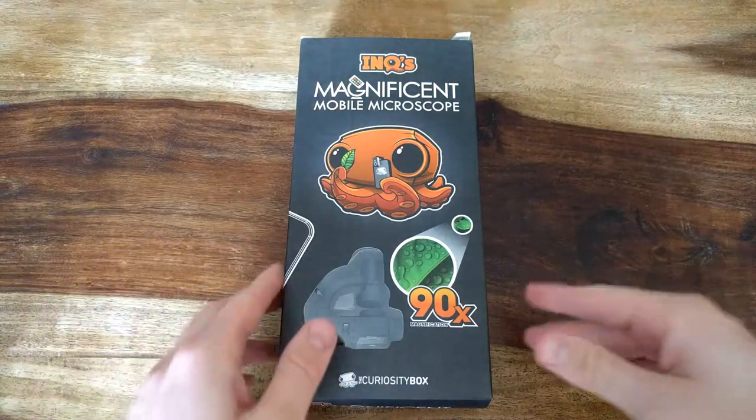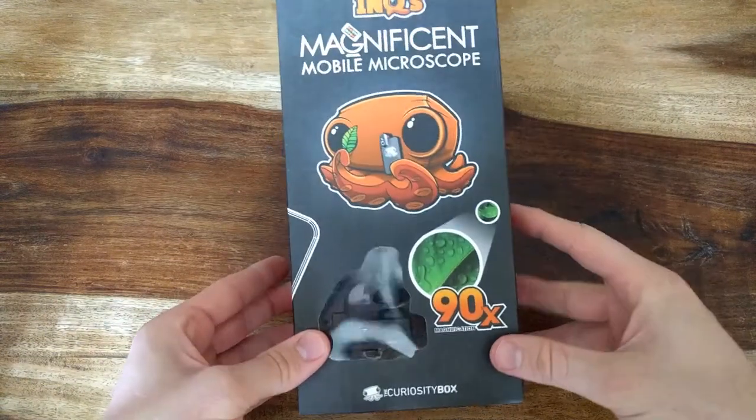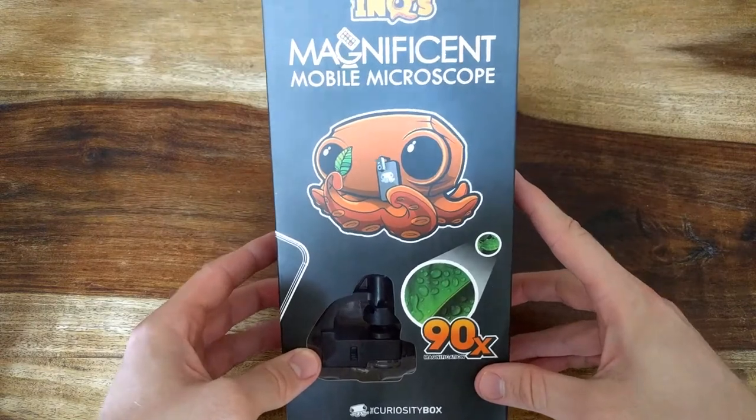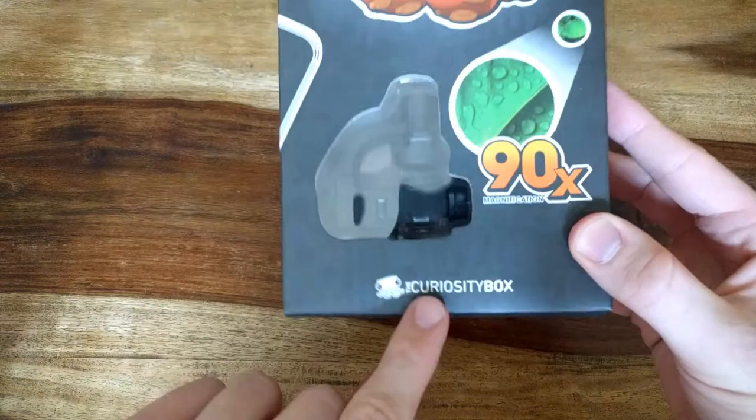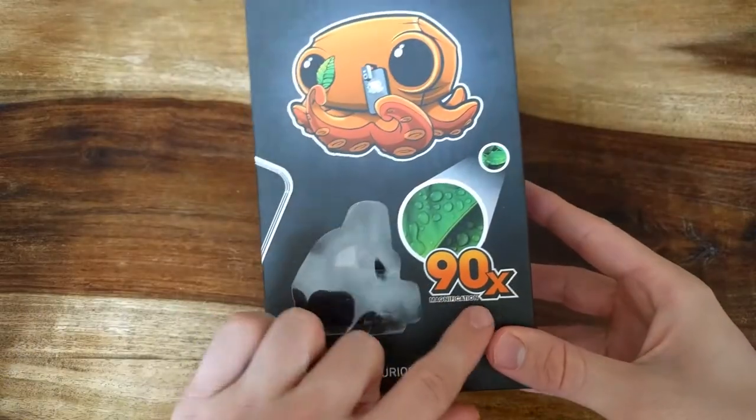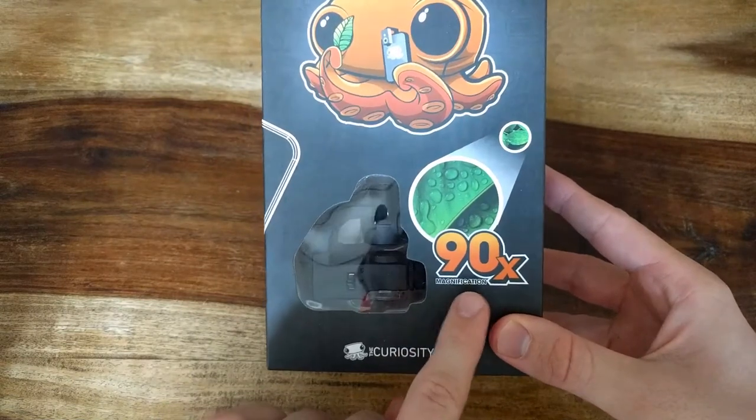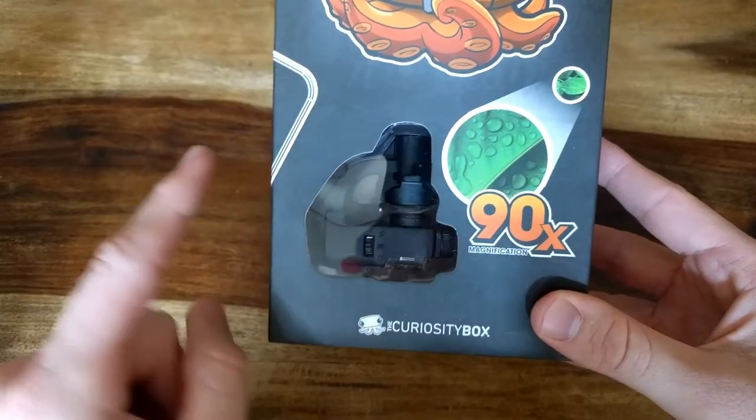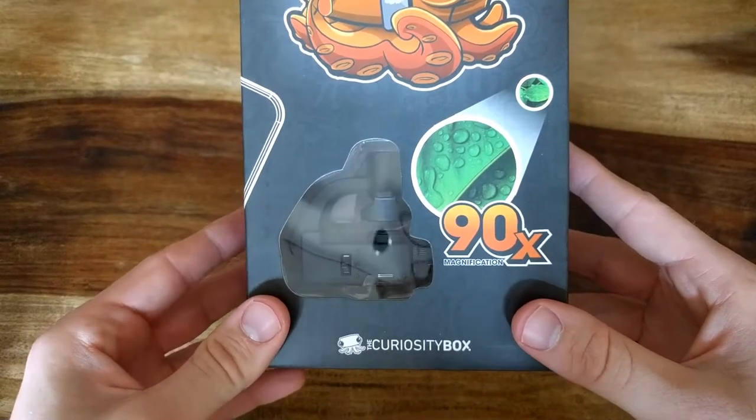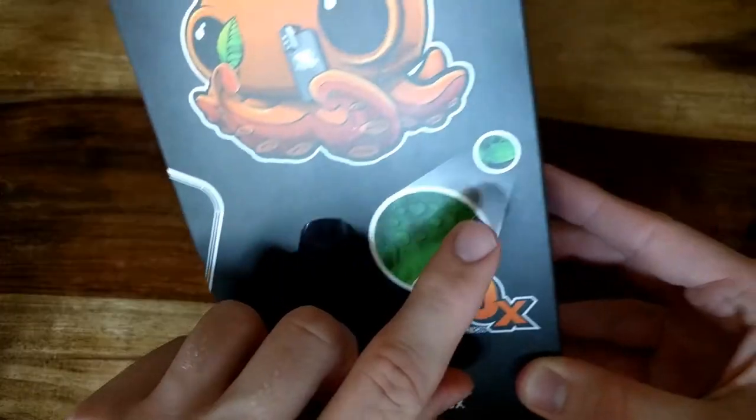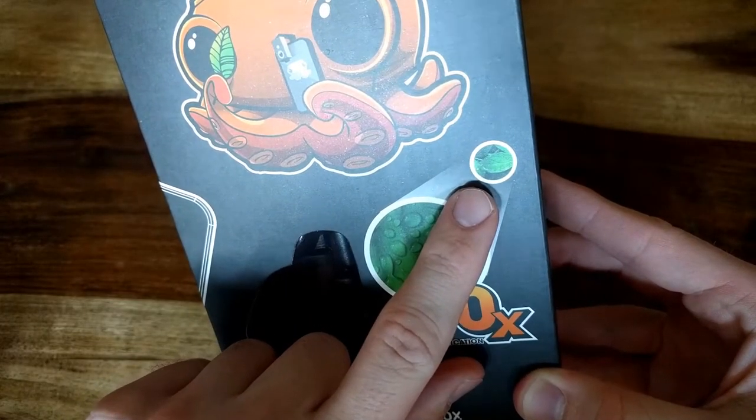This is a review for the magnificent mobile microscope by the Curiosity Box. As the package says, it should magnify the image by 90 times, so it is 9000 percent. This is what the original image should look like, and this is the magnified image.